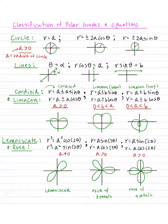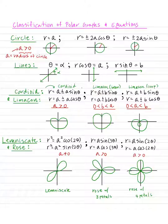Next is the cardioid — pretty much the heart shape. The cardioid equations are given by r equals a plus or minus a sine or cosine of θ. If both a values are the same numerical value, it's going to be a cardioid. Limaçon gives you two types: the bean shape and the loop shape. If r equals a plus or minus b sine or cosine θ and b is less than a, you get the bean-shaped limaçon. If a is less than b, you get the looping limaçon.